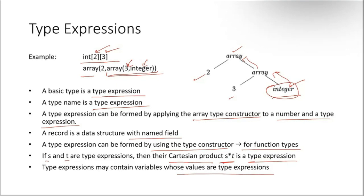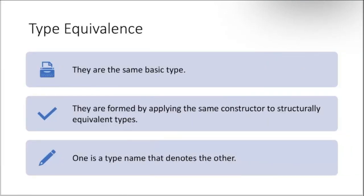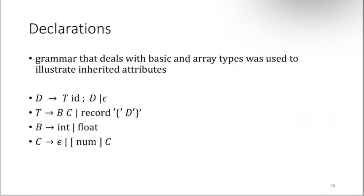Type equivalence: they are the same basic type, like double and float. You may have double variable double types and you may have float type, so they are quite equivalent. The only thing is that the length is different. They are formed by applying same constructor to structurally equivalent types. One is a type name that denotes the other.